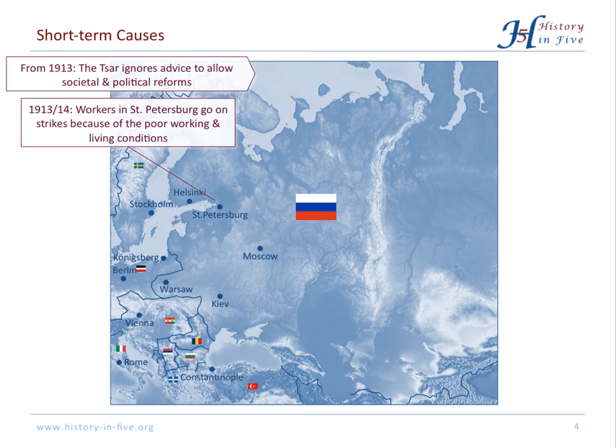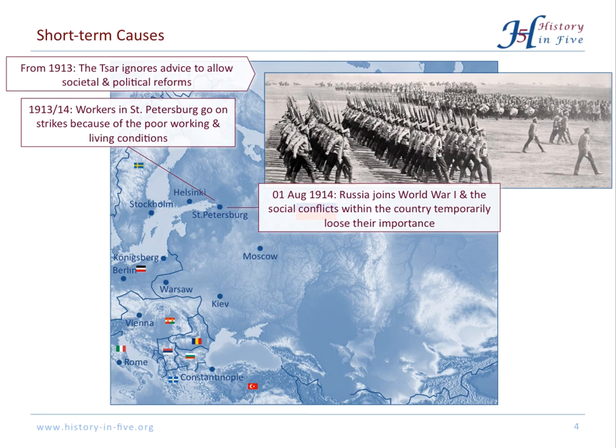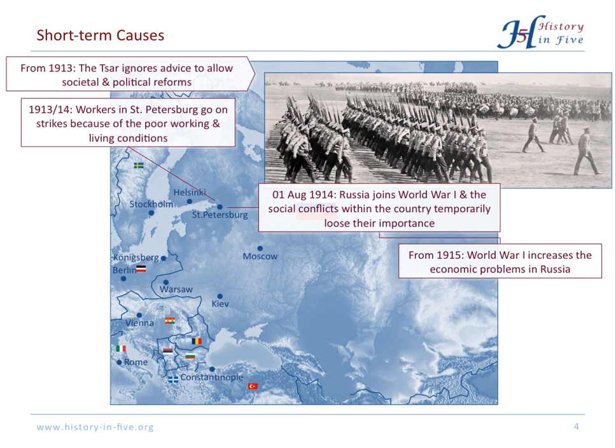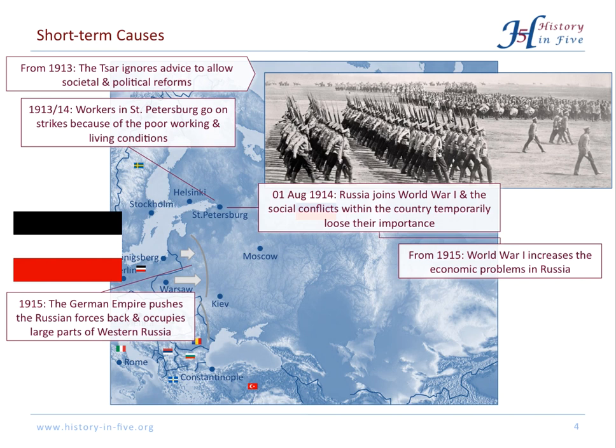But then, in 1914, there was the outbreak of World War I and Russian society gathered behind the Tsar to defend the Russian motherland. But World War I increased the economic problems in Russia. Furthermore, the Germans advanced and pressured the Russians militarily in western Russia.